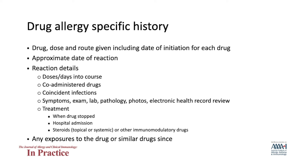Important drug allergy history items are similar for delayed and immediate drug reactions and include details related to the drug, dose, duration, and indication when the reaction took place. Additional key features related to symptoms and signs are important. Finally, the treatment and resolution of the reaction are helpful to understand the severity and sequelae.